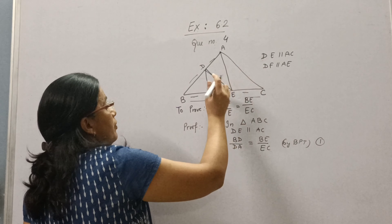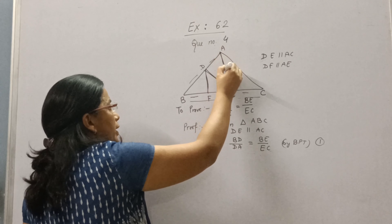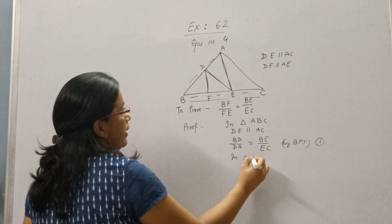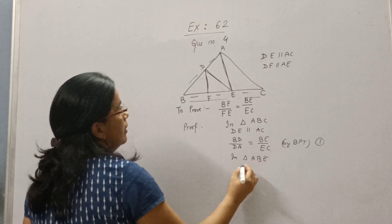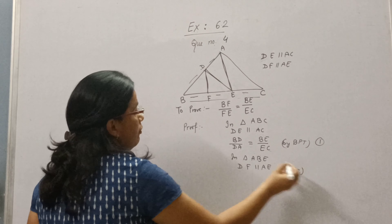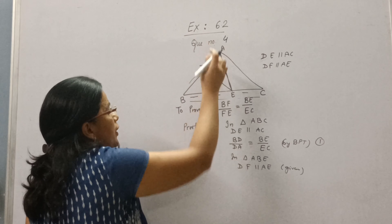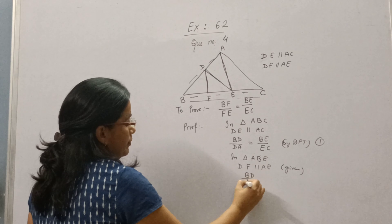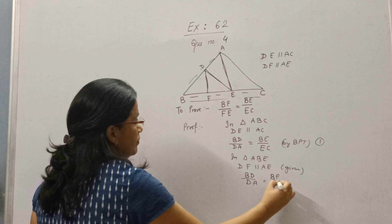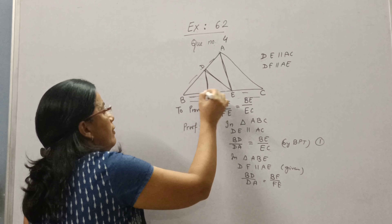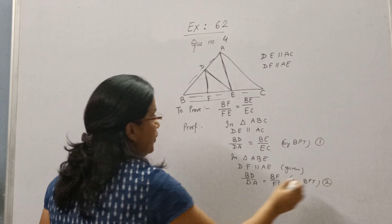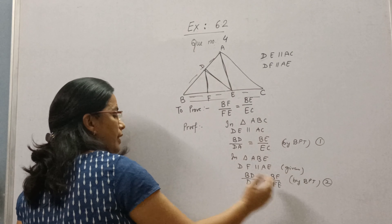So let's start. Since DE is parallel to AC (given), we will take triangle ABC. In triangle ABC, DE is parallel to AC. Now we will apply BPT. So according to BPT, BD upon DA is equal to BE upon EC. This is equation number 1.